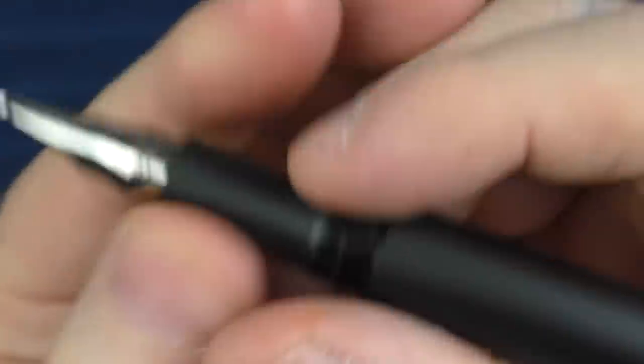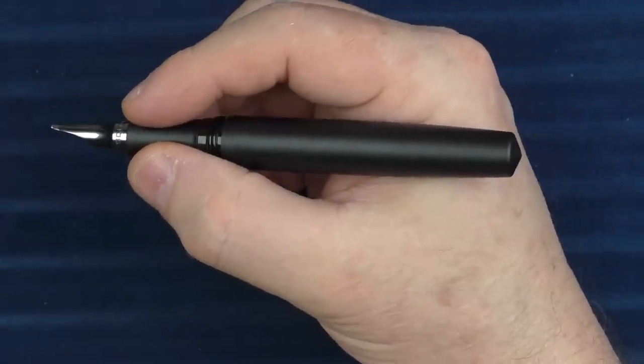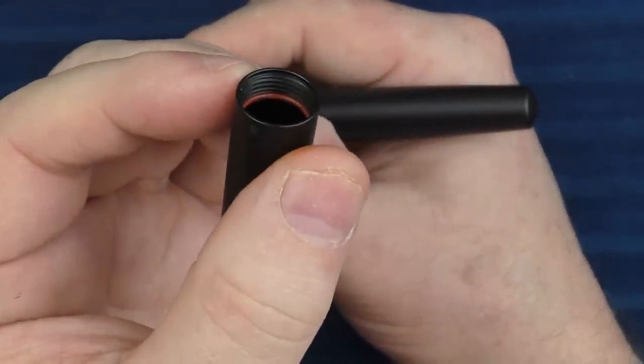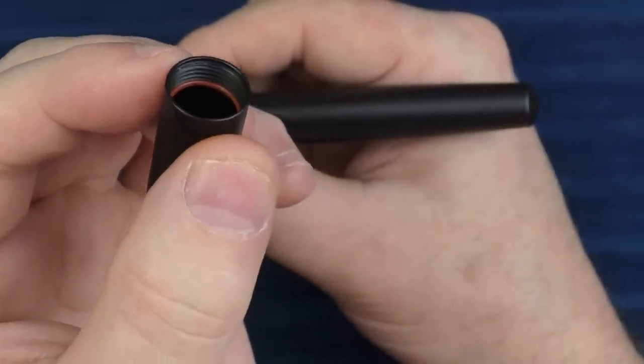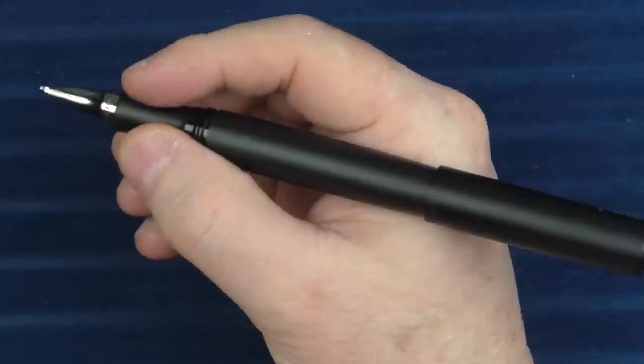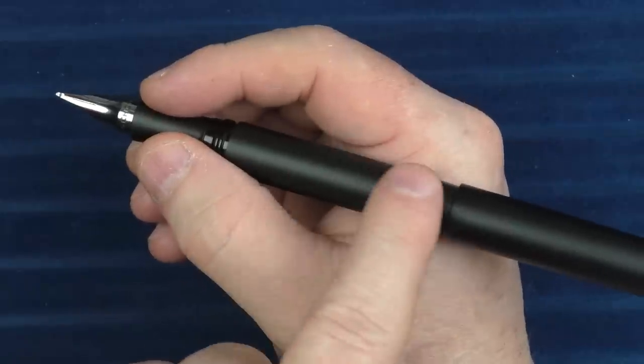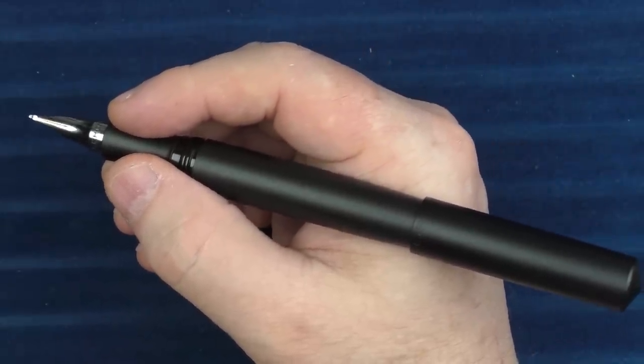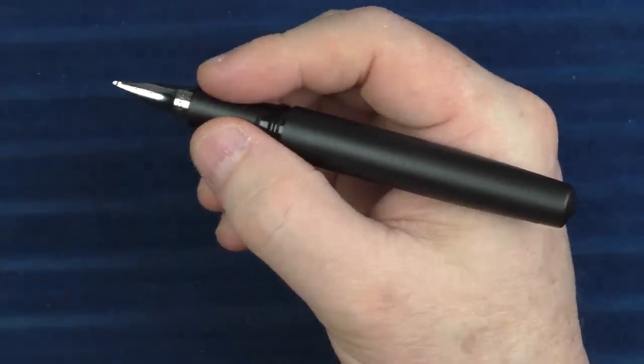Even though this is not the largest pen, it's long enough to use unposted. It can post. Inside the cap, there is an O-ring, which you see there, which makes contact with the barrel. So there is no metal-on-metal abrasion. I don't find that posting this pen throws off the balance. And I don't find that the edge of the cap is sharp against my hand, which is a good thing as well. Despite that, I personally prefer to use this pen unposted.